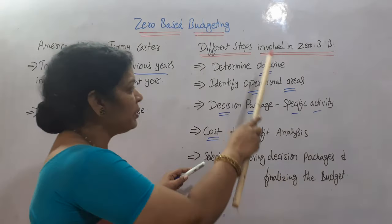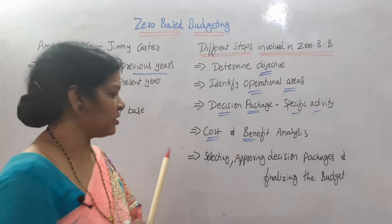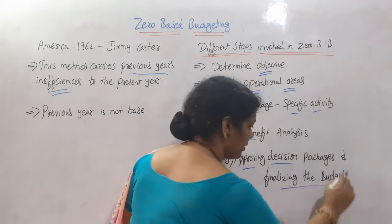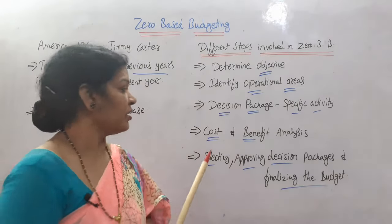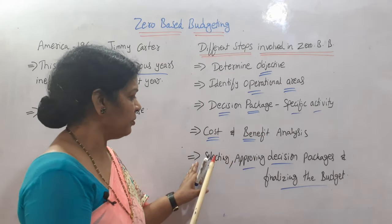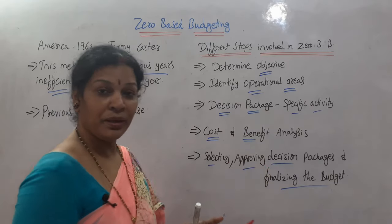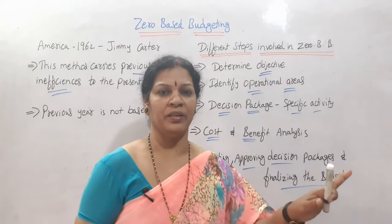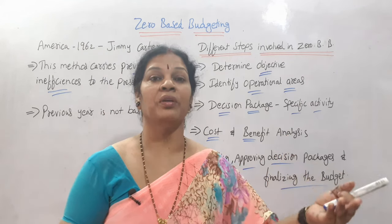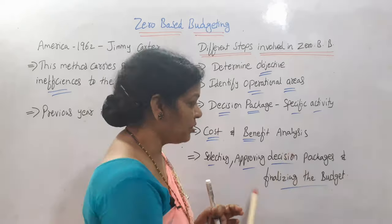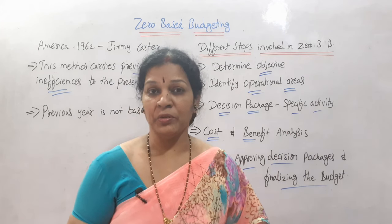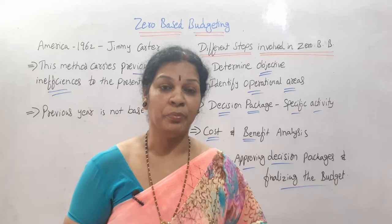Once all these steps are completed, the fifth and final stage is selecting and approving decision packages, and then finalizing the budget. We verify whether the selection is correct, make a final decision for approval of decision packages, and present the finalized budget that we are going to implement.